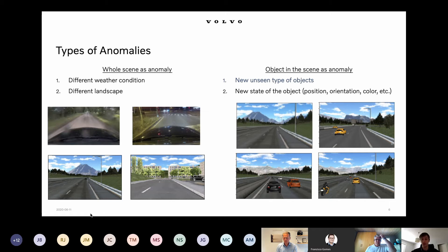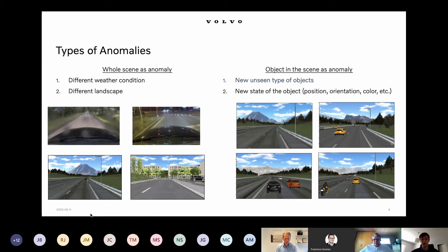For example, if the machine learning model was trained on empty highways without cars, and we feed it an image with cars, it will not understand what to do and will classify them wrongly. Or if we trained it on cars but want to detect pedestrians, pedestrians will also be anomalies because the model hasn't seen them during training and will output some wrong decision.